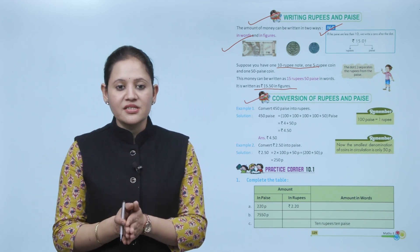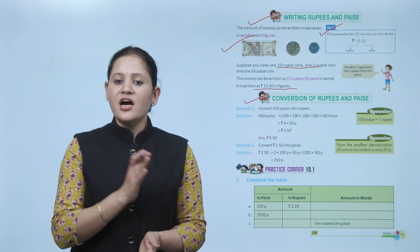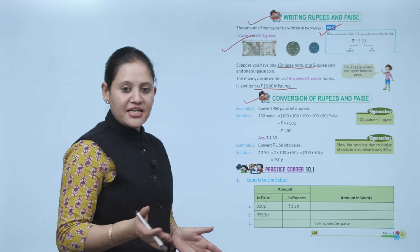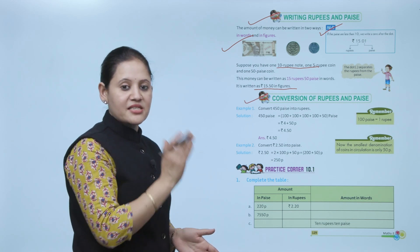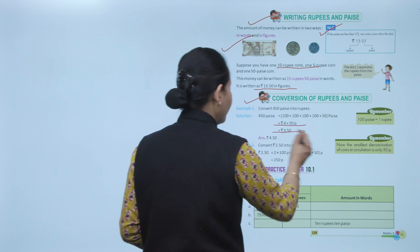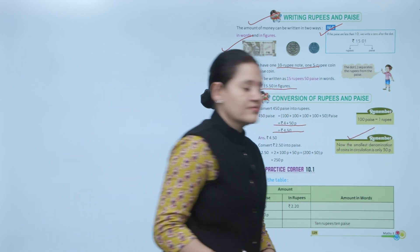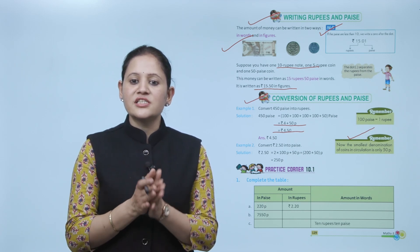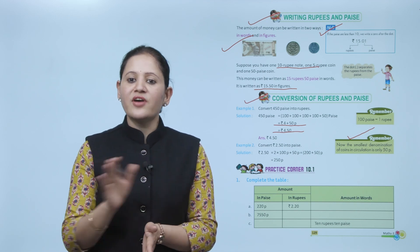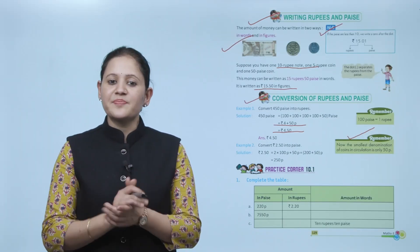Convert 450 paisa into rupees. As we know, 100 paisa equals 1 rupee, so we'll divide by 100. The digits at ones and tens place become the paisa and the rest will be rupees. So 450 paisa equals 4 rupees 50 paisa, or we can write rupees 4.50. Remember, the smallest denomination of coins in circulation is only 50 paisa — 25 paisa, 10 paisa, and 5 paisa are not in use nowadays.